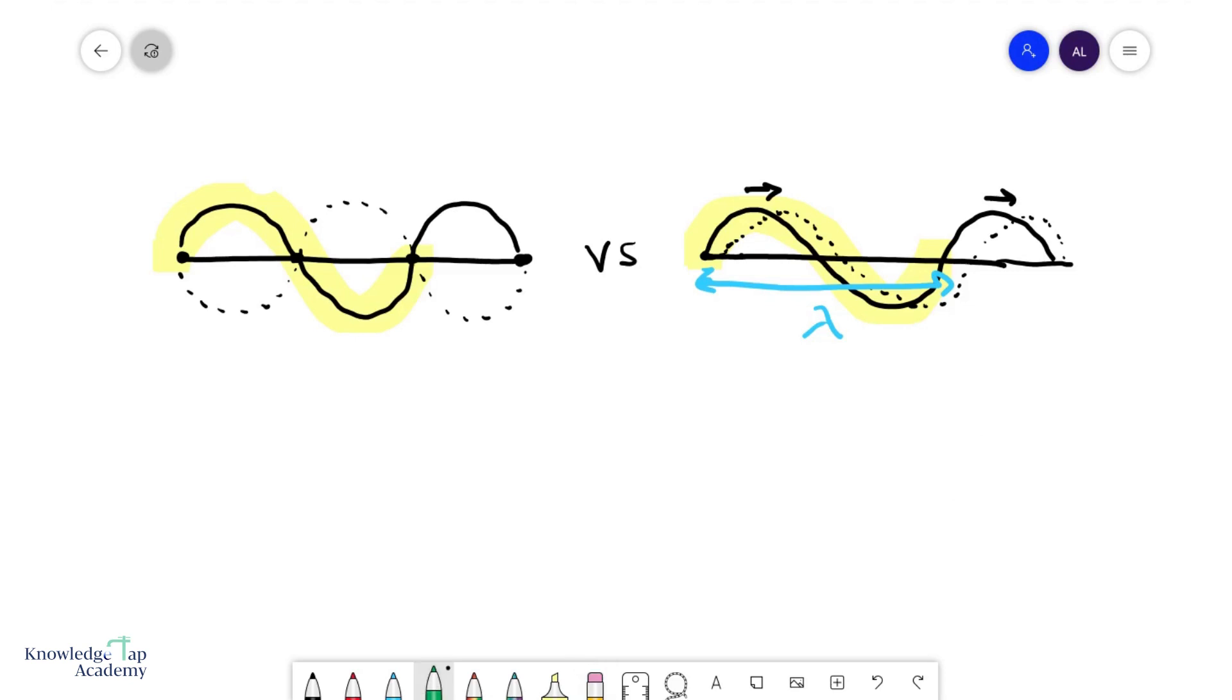Let's start with a progressive wave. We know that all particles on a progressive wave are moving with the same SHM, and so they all technically have the same amplitude. Whereas on a stationary wave, we know that the nodes basically do not move, and so the amplitude is zero.